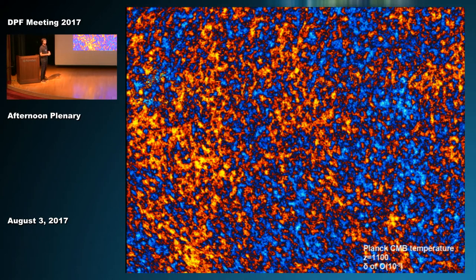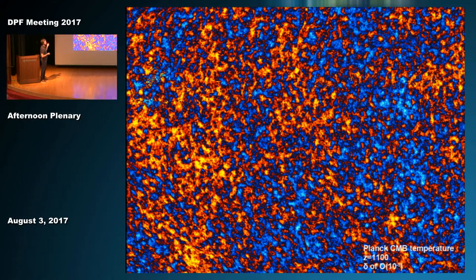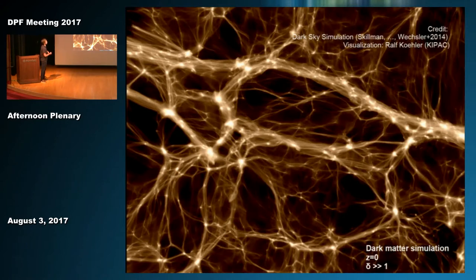If you find it unremarkable that all these measurements agree with this strange model, consider this: making measurements at a very early stage of the universe with tiny fluctuations of the density of just 10 to the minus five, and comparing them to measurements of structure in the late universe with density fluctuations much larger than unity, and seeing whether those two things really match in all ways possible—that is remarkable.